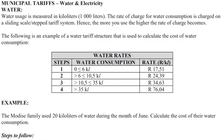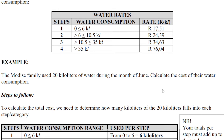Now let's look at the example: the Medica family used 20 kilolitres of water during the month of June — calculate the cost of their water. They used 20, so the first six kilolitres is charged at R17.51. That leaves 14 kilolitres. The next 4.5 kilolitres, from 6 to 10.5, is charged at R24.39. Then the remaining balance is charged at R34.63.